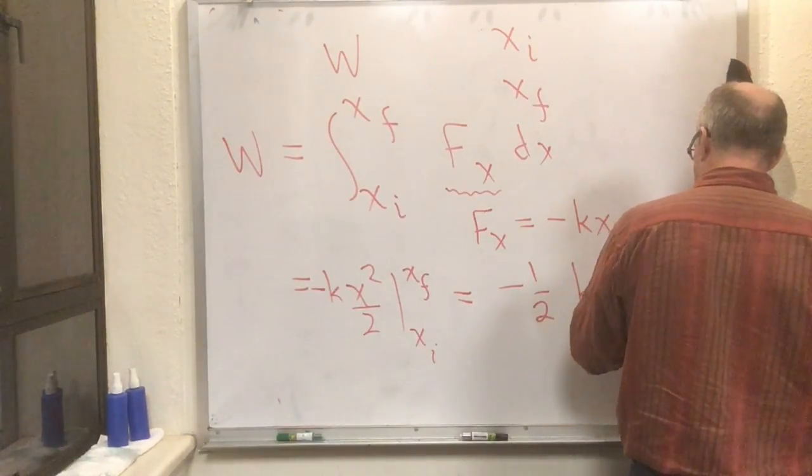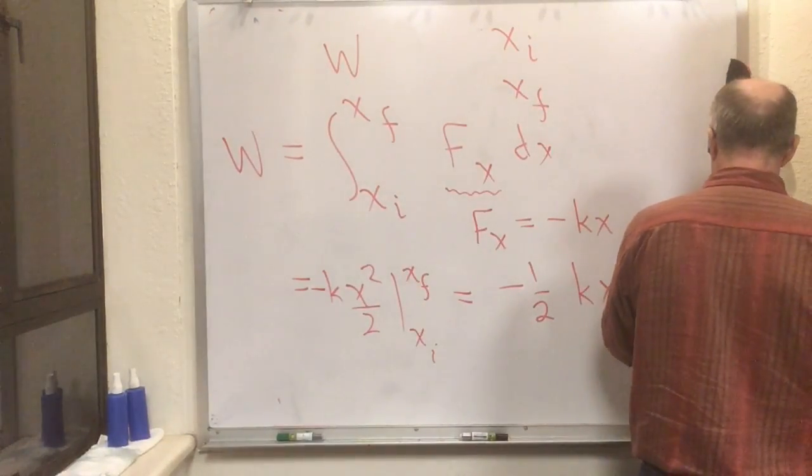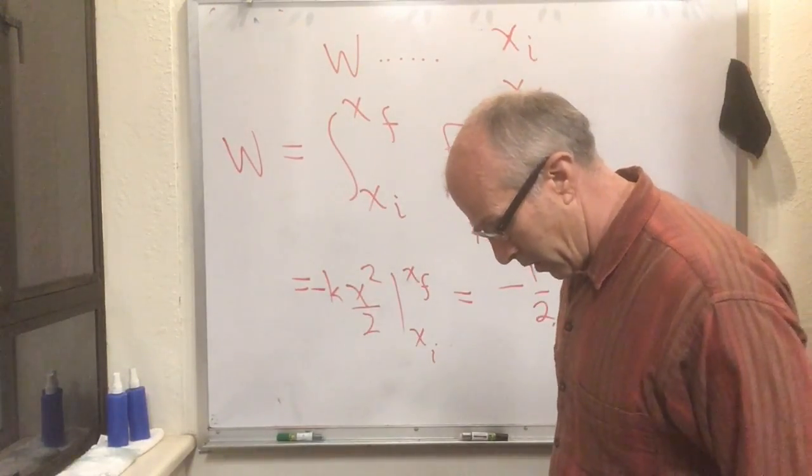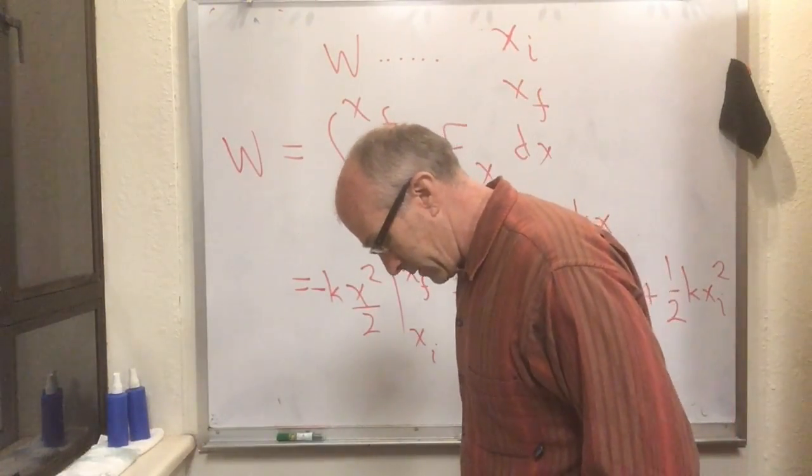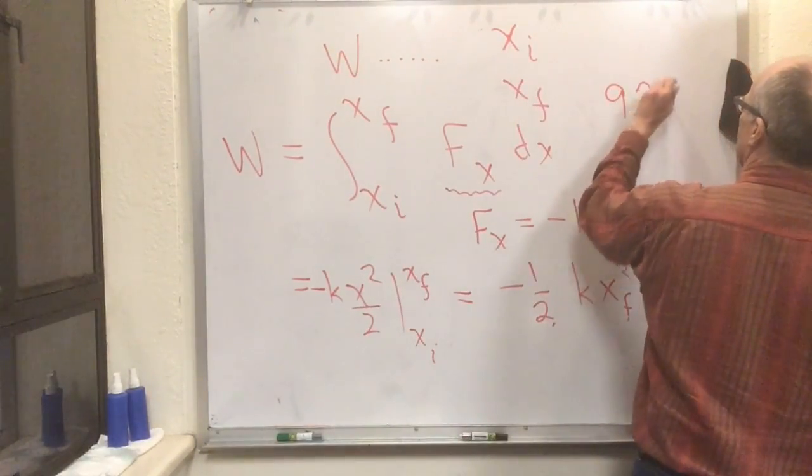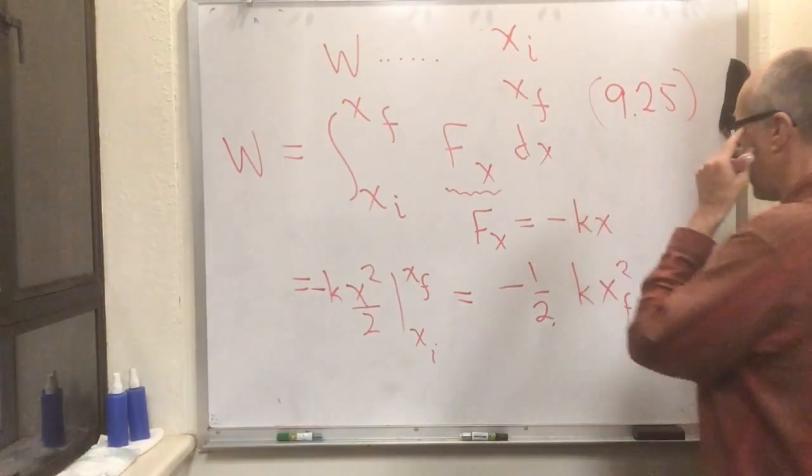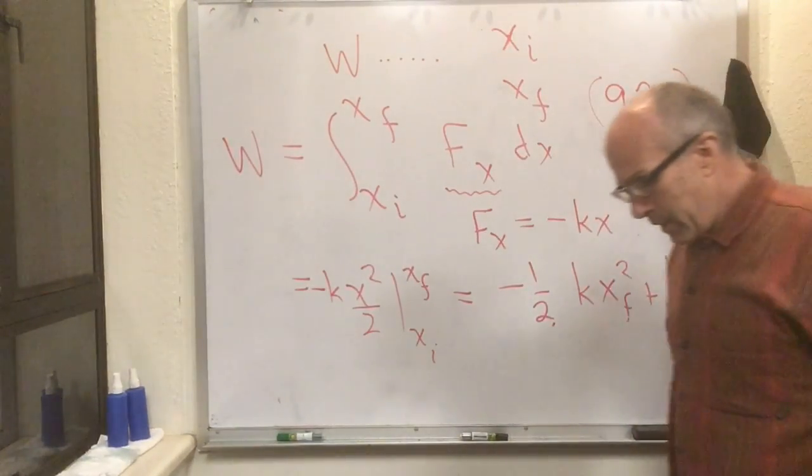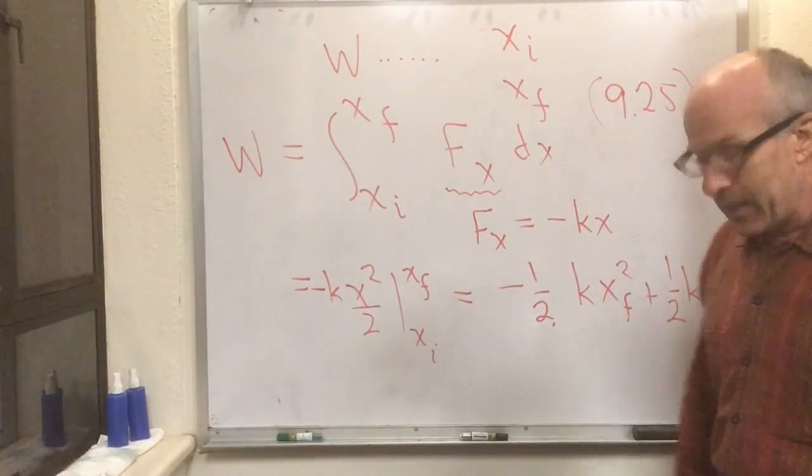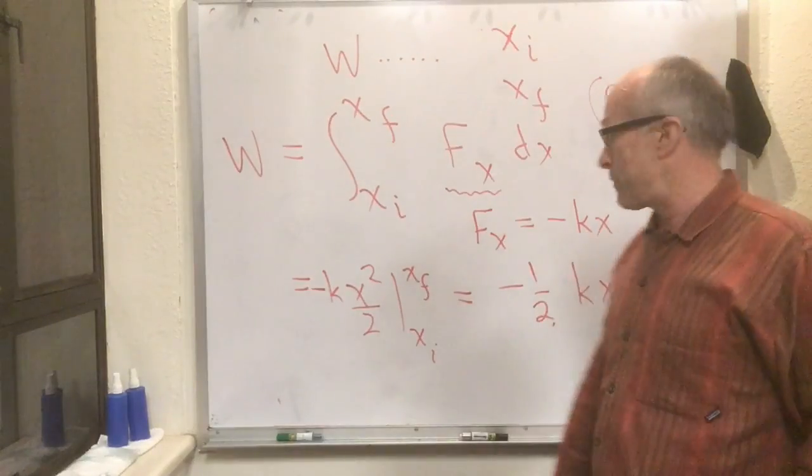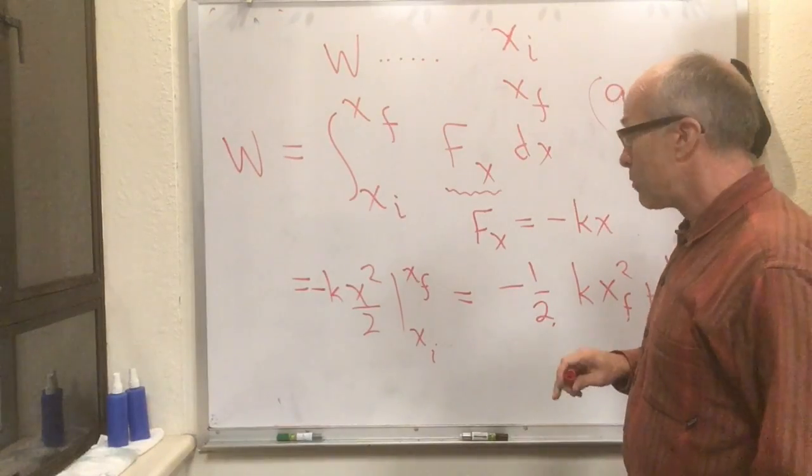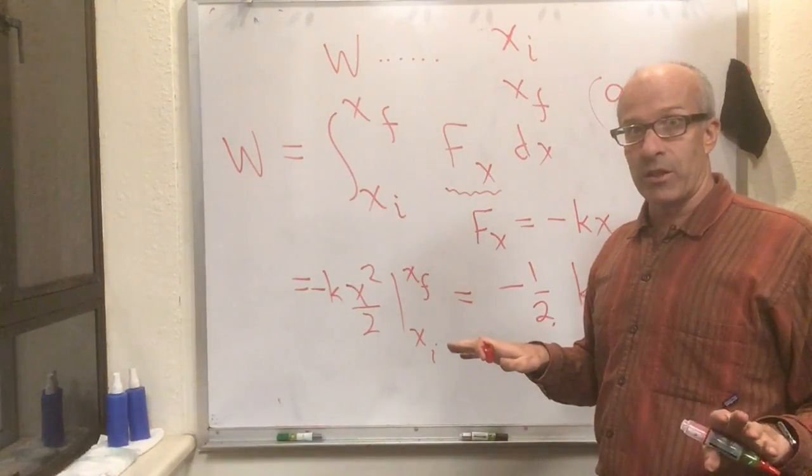You might want to compare with what Knight said. Knight said almost exactly the same thing in equation 9.25. The only difference is he called his coordinate s, so he's got s's all over the place instead of x's. And he didn't make his life easy by taking the origin of coordinates to be the natural rest position of the spring, so he has to have delta s's all over the place.